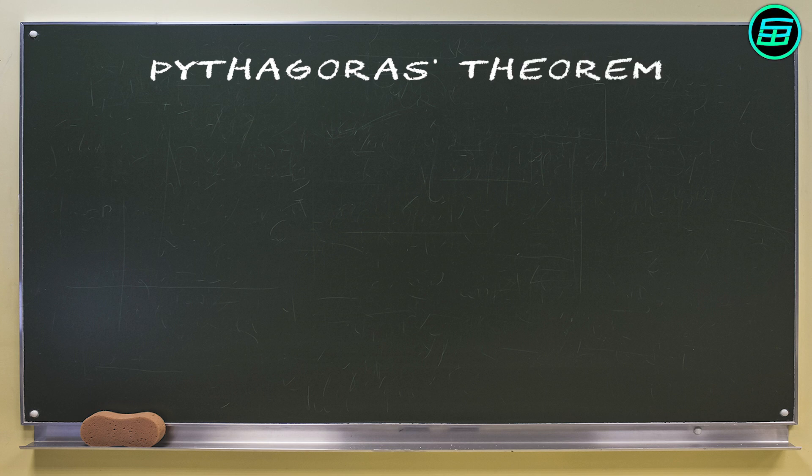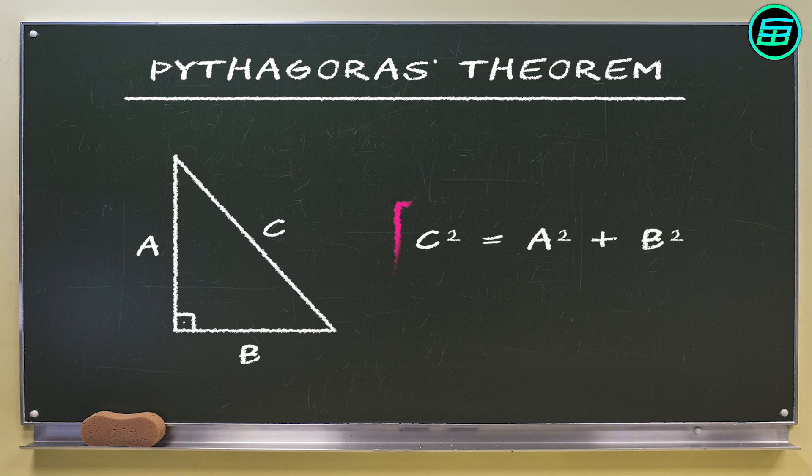Everyone learns in school about Pythagoras' Theorem. In a right-angled triangle, the square of the hypotenuse equals the sum of the squares of the other two sides.